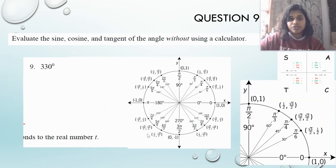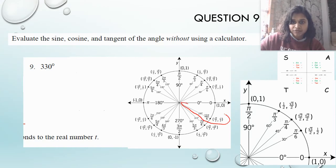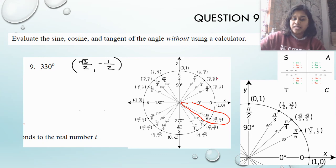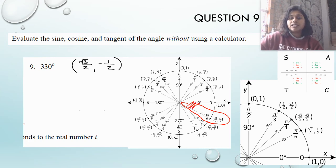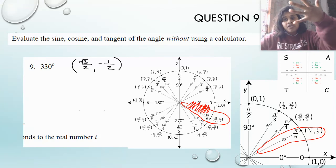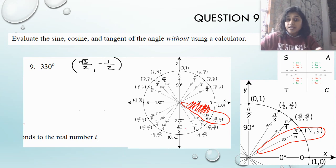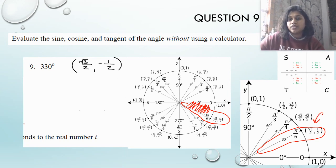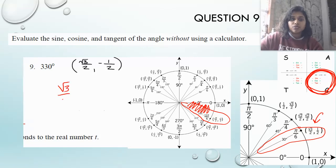One last question: 330 degrees. It's already in standard position — no adjustment needed. 330 degrees is in quadrant 4. If I go to my unit circle, that coordinate is square root of 3 over 2, negative 1 half. If I just had quadrant 1, my reference angle is 360 minus 330 equals 30 degrees — it's the distance to the nearest x-axis. 330 is close to the x-axis, so 30 is the reference angle. In quadrant 4, x is positive and y is negative.